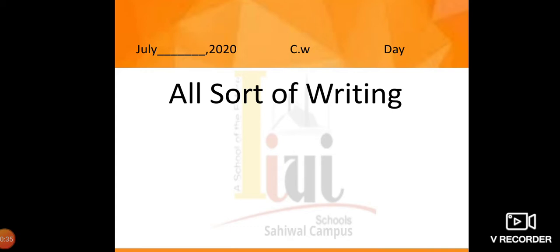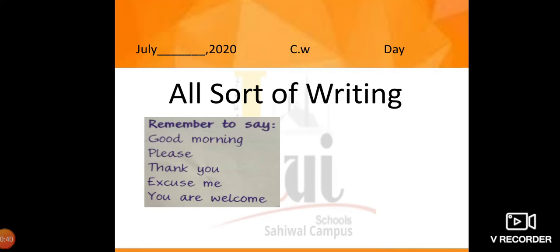Please open your books to page number 11. Write the date and day on the top. On this page you can see different kinds of writing, written in different styles — things you mostly see in your school. The first one says: 'Remember to say good morning, please, thank you, excuse me, you are welcome.' This might be written on your classroom door, wall, or board because it is teaching you manners.